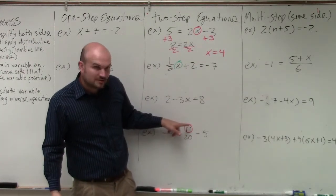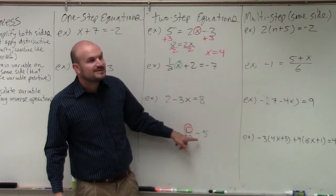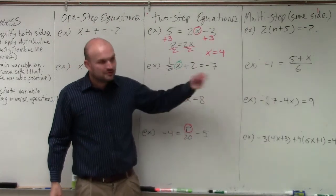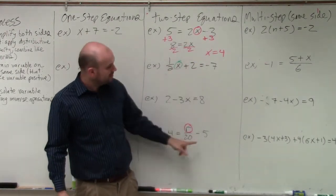You can see my r. There's only two things that are happening. It's being divided by 20, and it's being subtracted by 5. Again, use the reverse order operations. Undo addition and subtraction first.